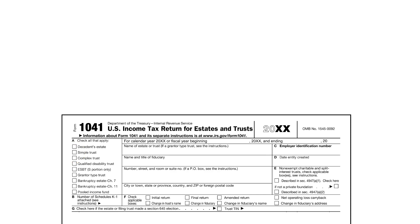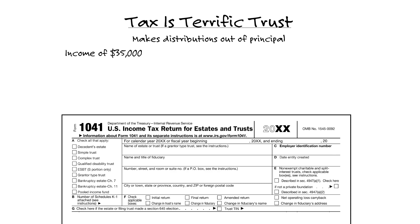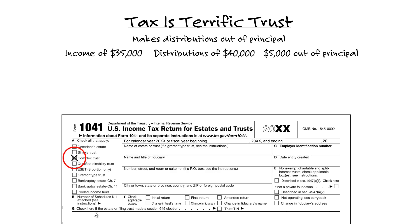Our second example: the Tax Is Terrific Trust is a complex trust because it makes distributions out of principal, violating the rules and requirements for a simple trust. The trust's accounting income is $35,000 while its distributions were more than that — they were $40,000. Thus, it distributed $5,000 of principal. Hence, we're going to click it off as a complex trust.